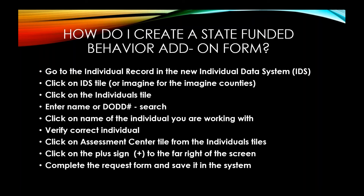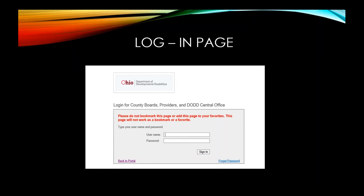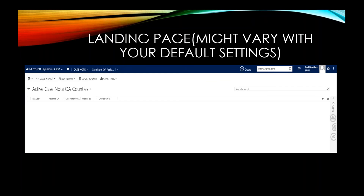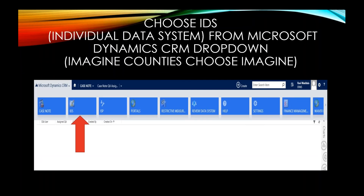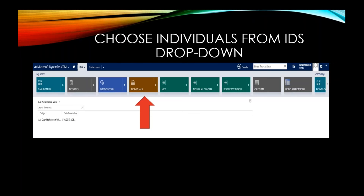From the Individuals tile you will see a plus sign to the right of the screen. When you click that, your request form will pop up in the system. This is your login page and landing page — it may vary based on your default settings. Choose IDS Individual Data System from the Microsoft Dynamics CRM dropdown.